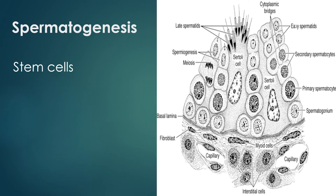Spermatogenesis involves two processes: mitosis for cell duplication and meiosis from diploid to haploid. The stem cells are your spermatogonia, which are located at the basal level of the seminiferous epithelium. Spermatogonia divide mitotically to generate daughter primary spermatocytes through the process of spermatocytogenesis. One or more spermatogonia remain within the stem cell population and are firmly adherent to the basal lamina.